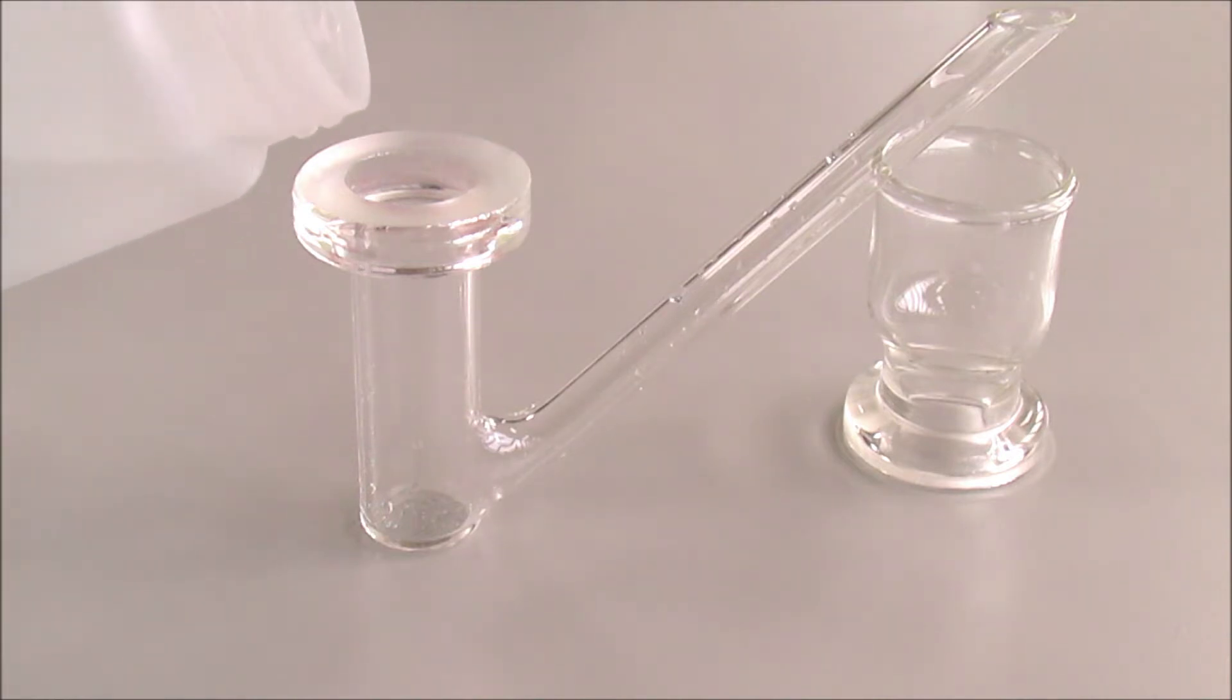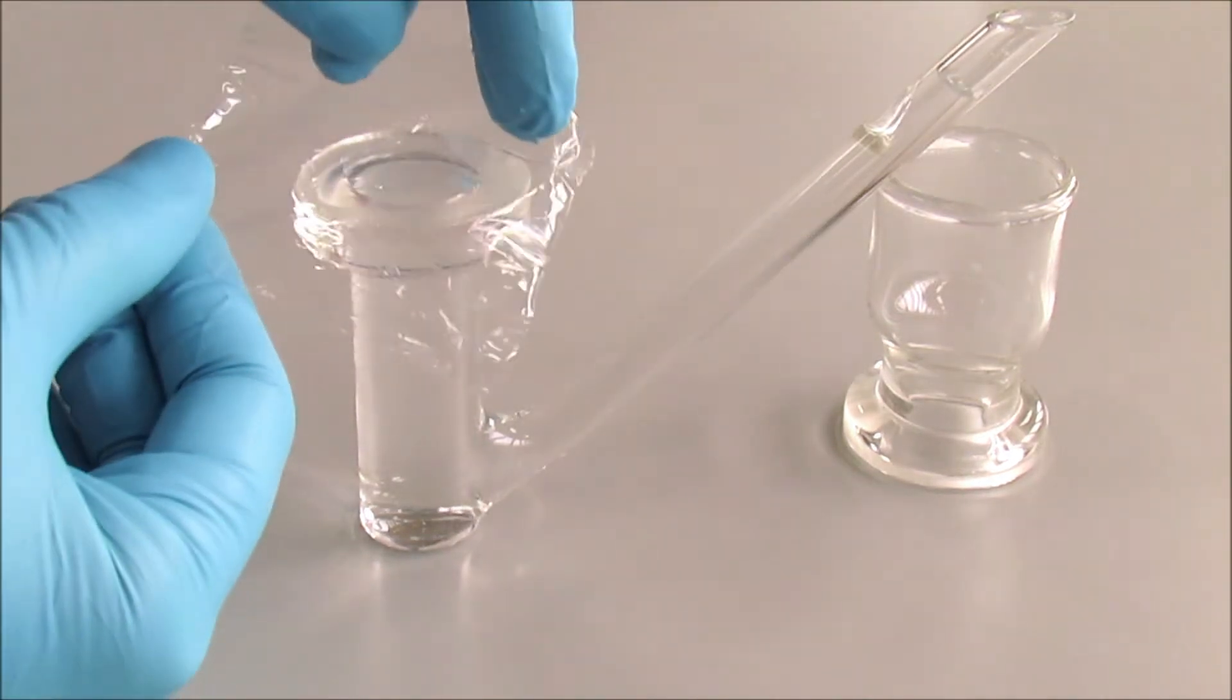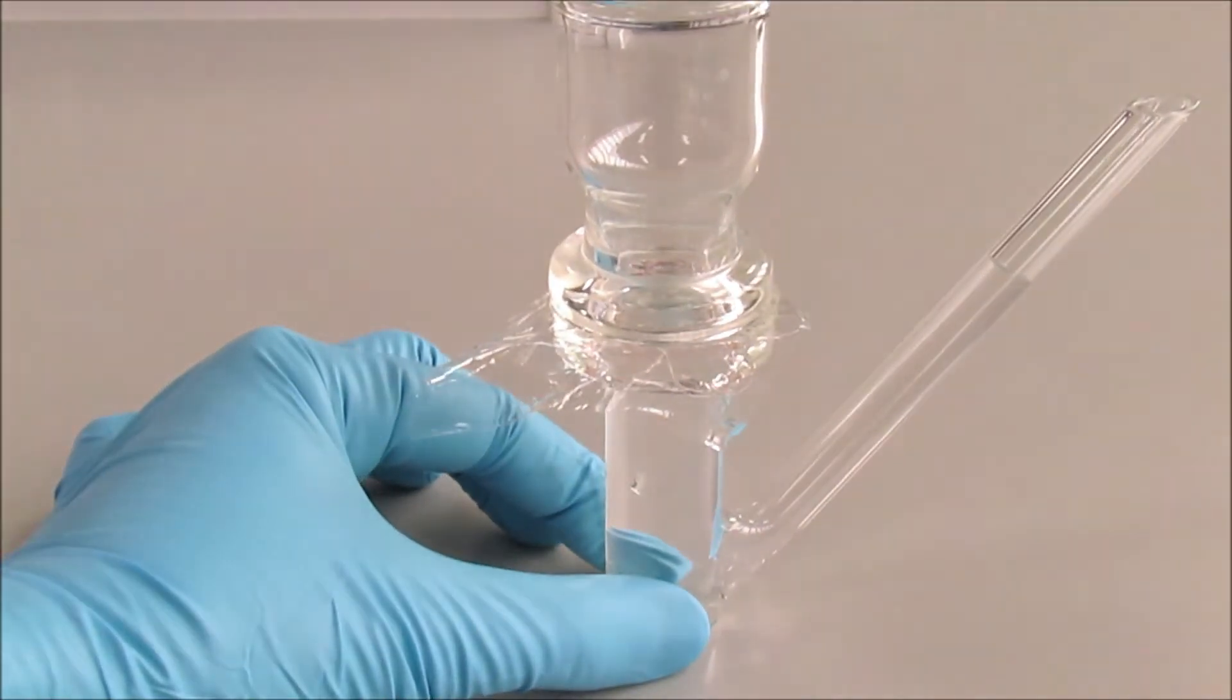So that's the way you fill up the receptor compartment, place a membrane, put a donor compartment on, making sure they are aligned, and then clamp them together.